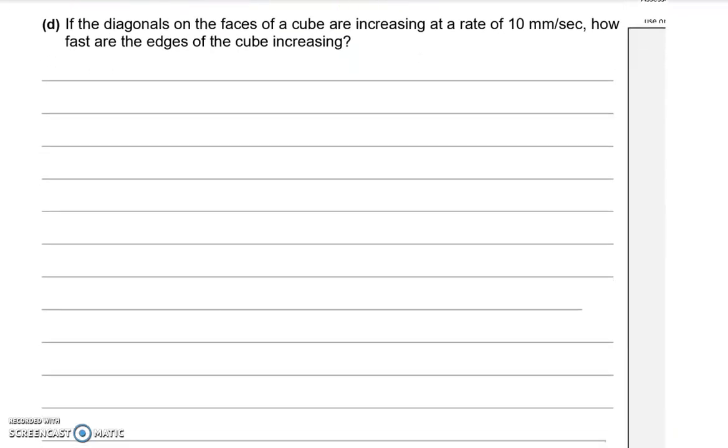Part D. If the diagonals on the faces of a cube are increasing at a rate of 10 millimetres per second, how fast are the edges of the cube increasing? So we have a rates of change question. Let's start by taking a little snapshot of what we think this looks like. So the diagonals of the cube, we've got the rate of increase there. Let's call that Y. And each of the sides of the cube are X.